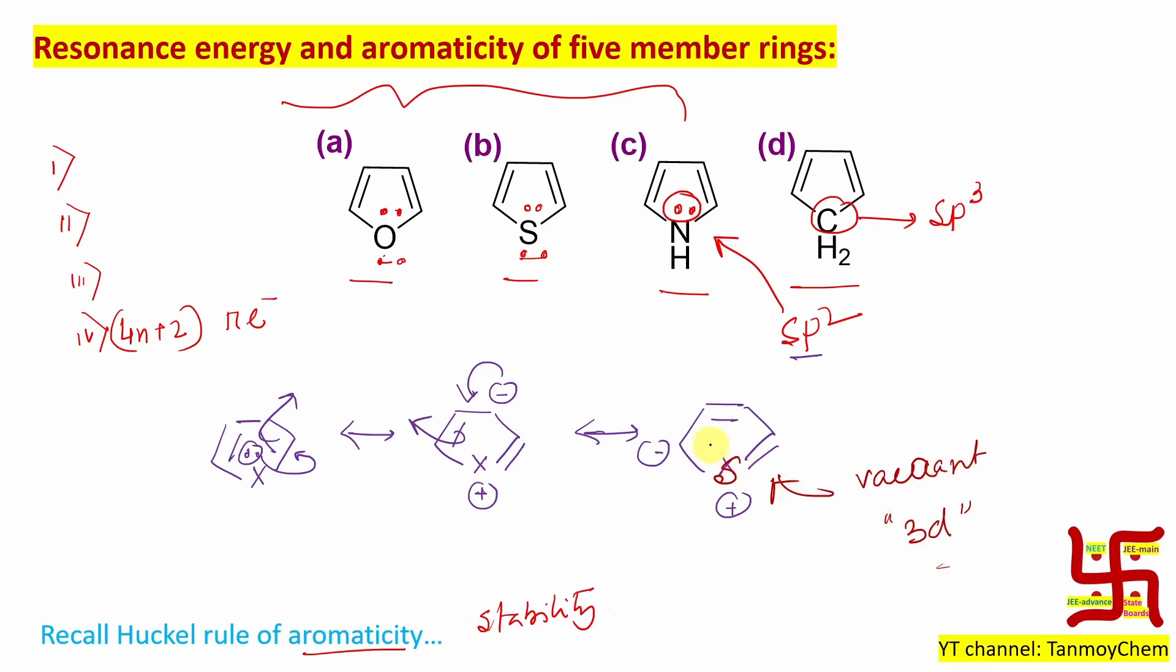Since this 3d is vacant, it can participate in conjugation. You can expect a p orbital carrying two electrons; it's a negative charge here, and d orbital is vacant this way.